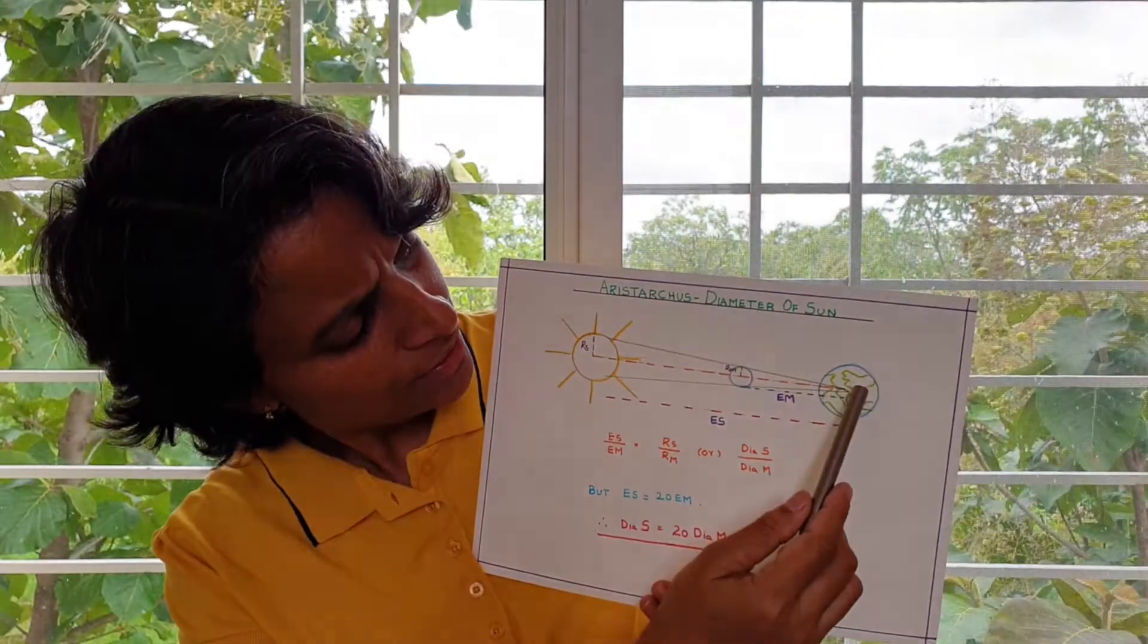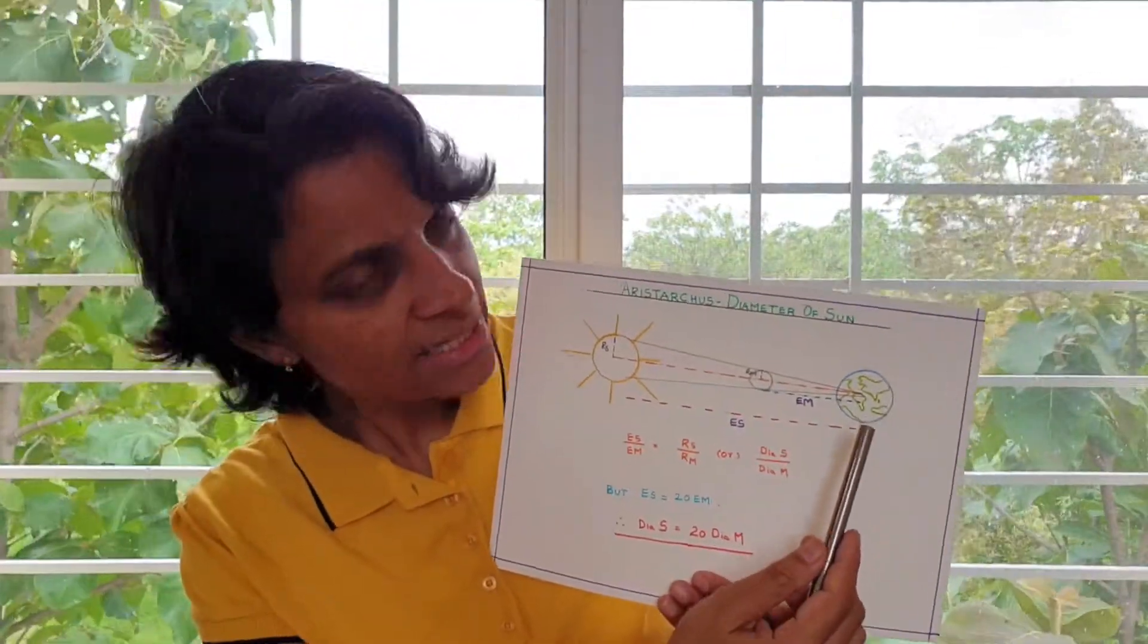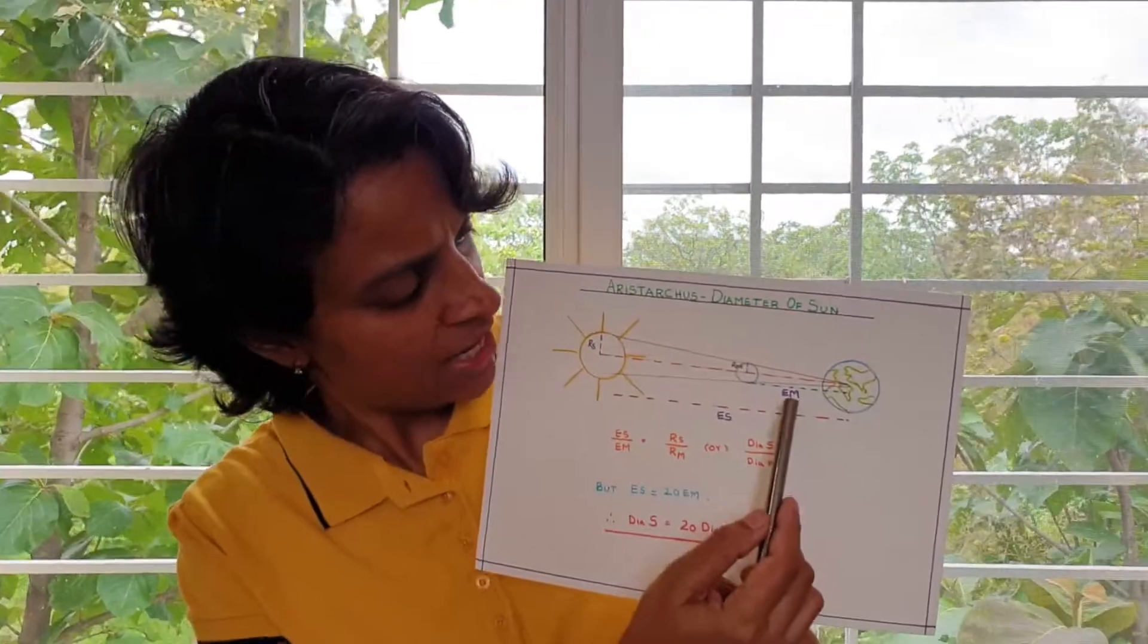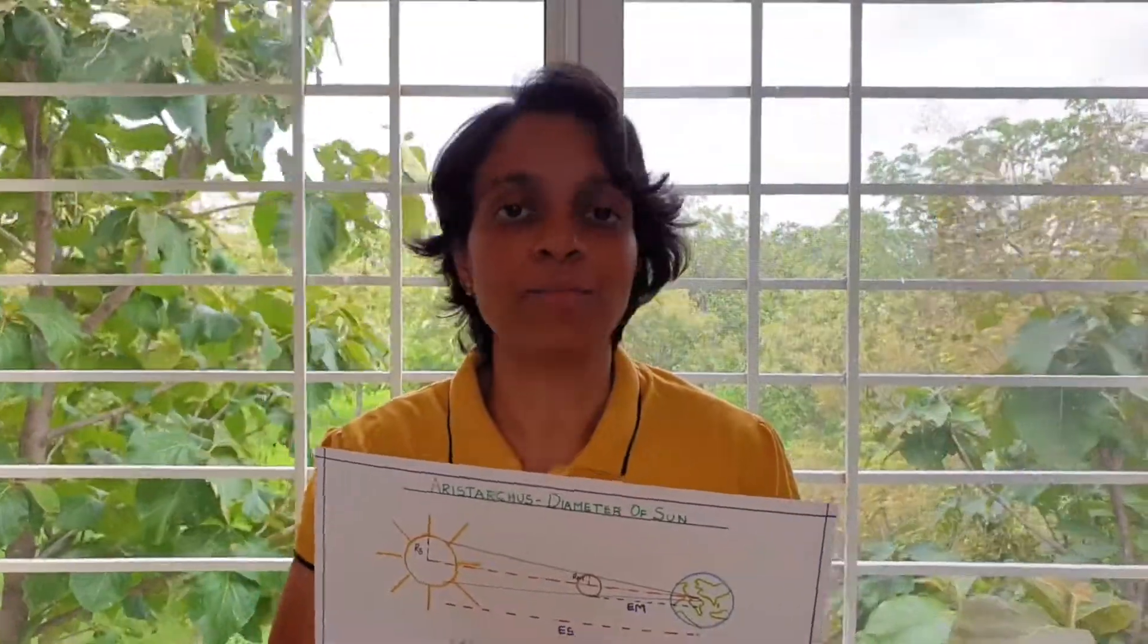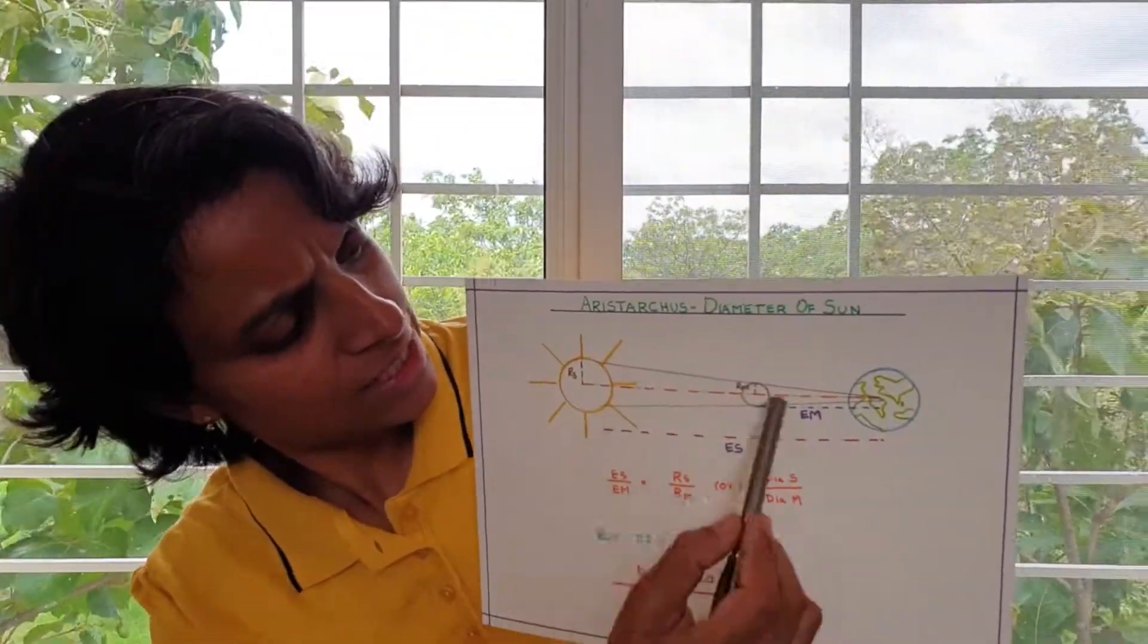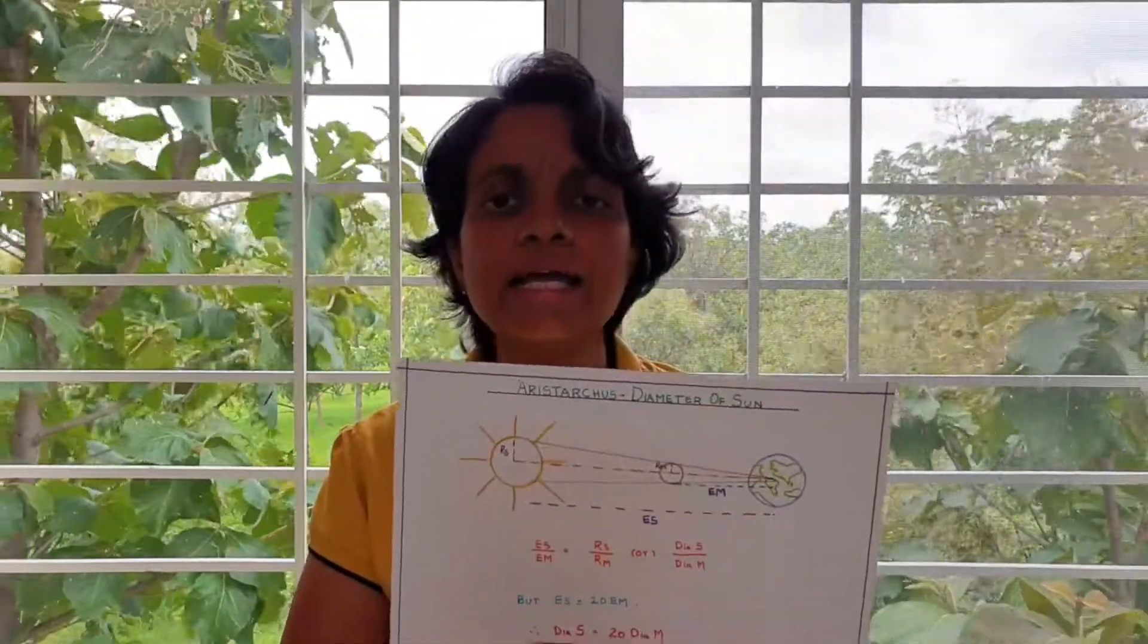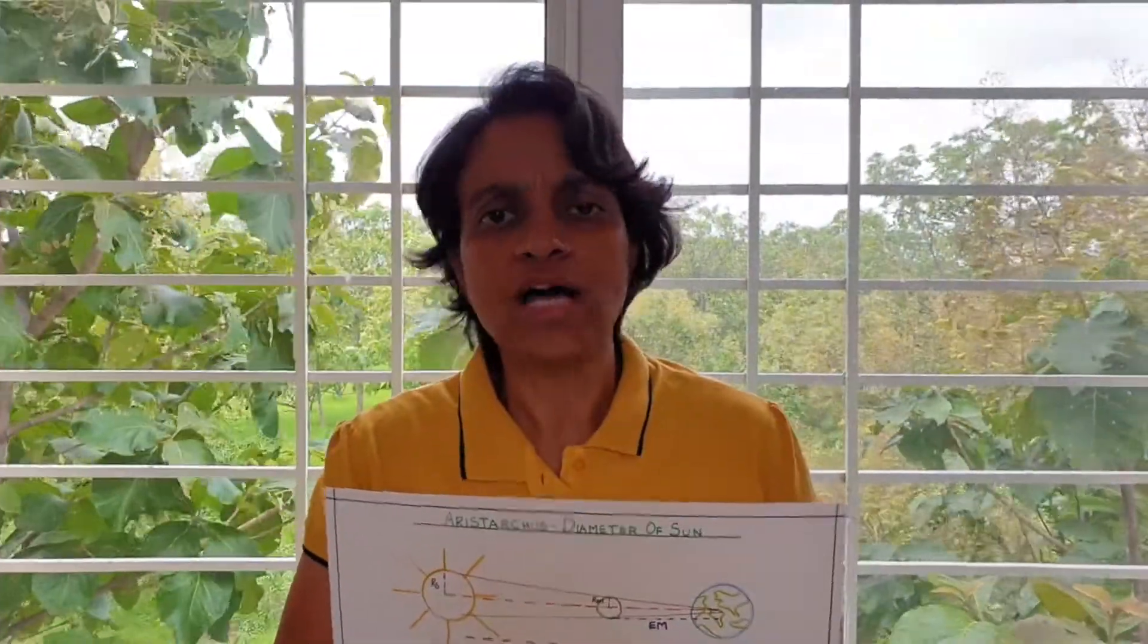The distance between earth and moon is already written as EM. Yesterday also we did the same thing. And the distance from the earth to the sun is ES, earth sun distance, earth moon distance. Now he said that because these two triangles are similar, the ratio of ES by EM will be equal to the heights RS by RM, radius. So Aristarchus's logic was simple. The ratio of ES by EM will be equal to the heights that is RS by RM. And radius is nothing but diameter, two times the diameter, 2R is diameter.